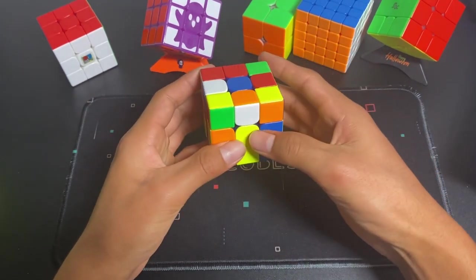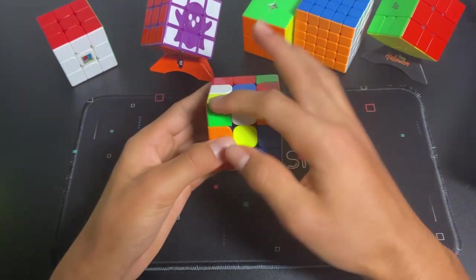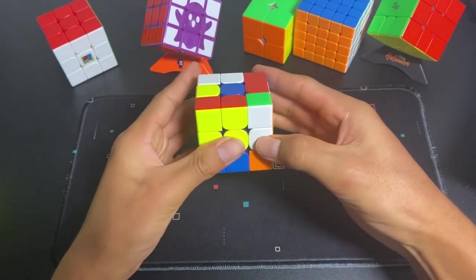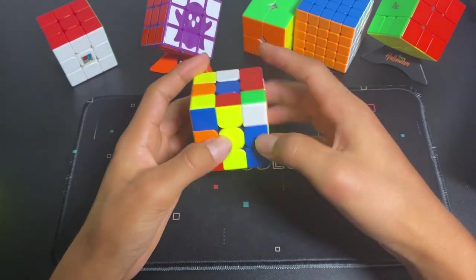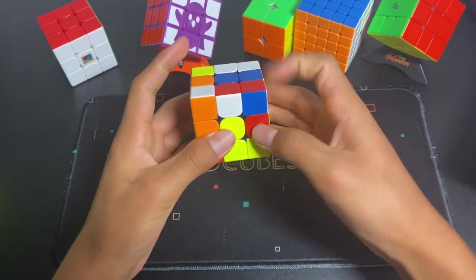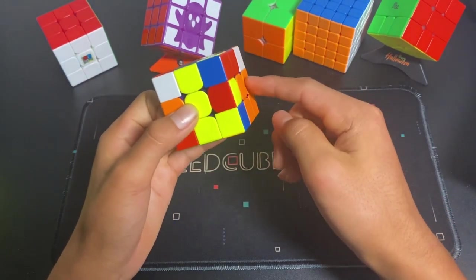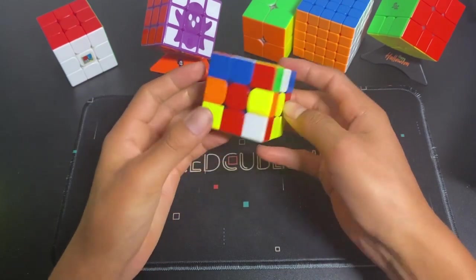So instead of solving this right here, you could solve this pair here using wide moves into the back. And that is much more efficient.